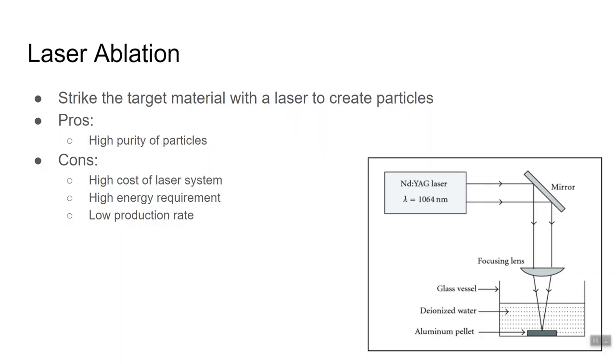Now, out of all the methods researched, the best method for creating nanoparticles for use in electric motors at an industrial scale would be ball milling. Now, just to summarize, ball milling produces the most nanoparticles per hour, resulting in a high production rate, and it is a cheap and simple operation, and it also produces uniform particles.